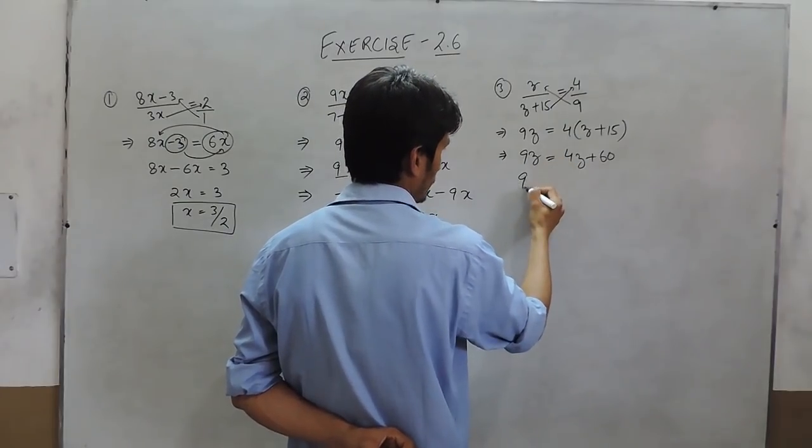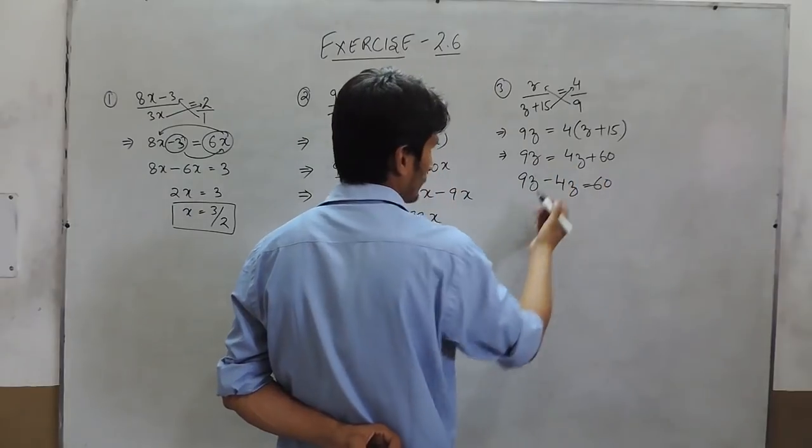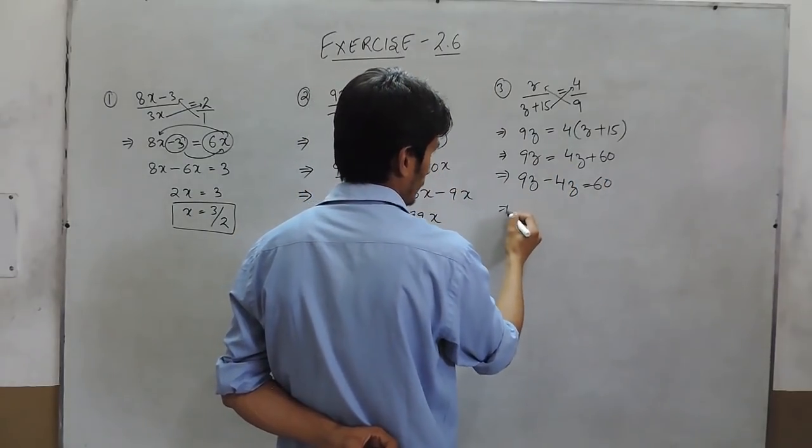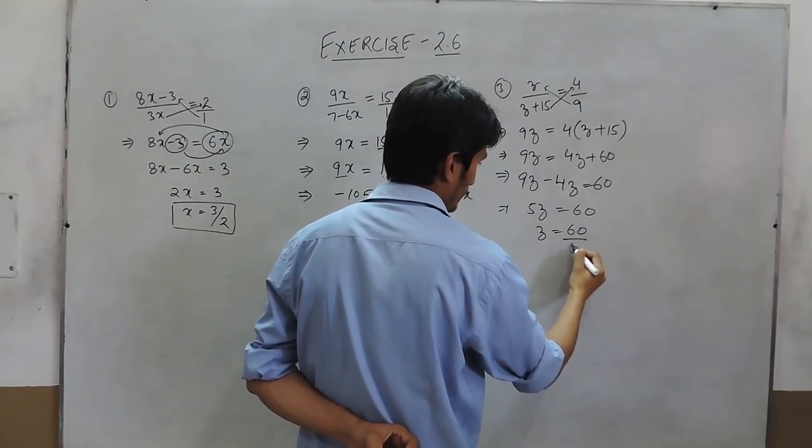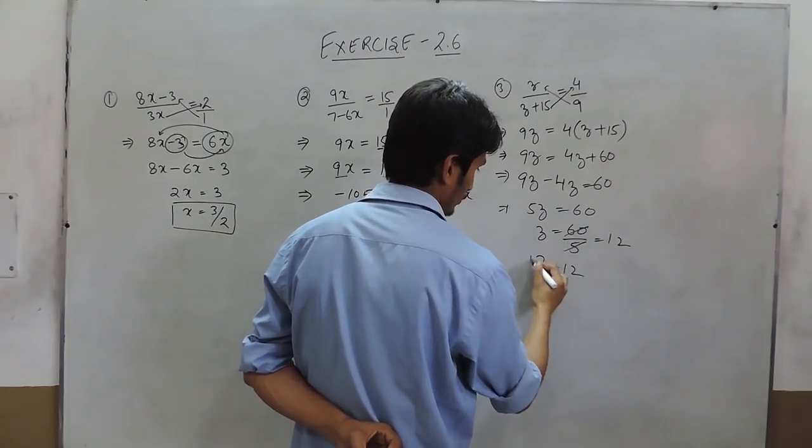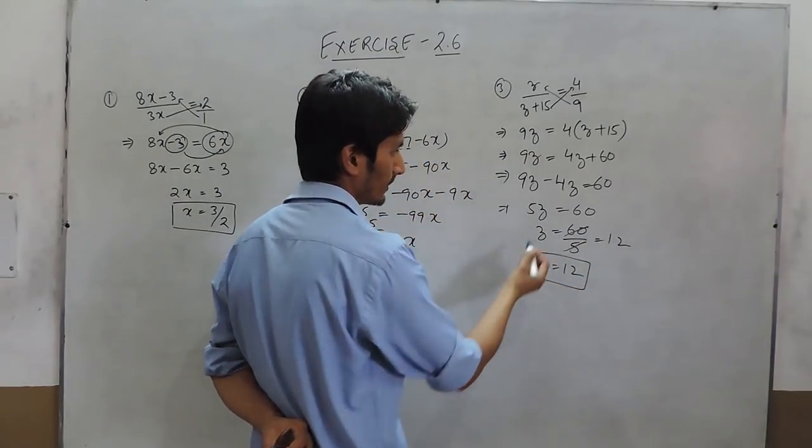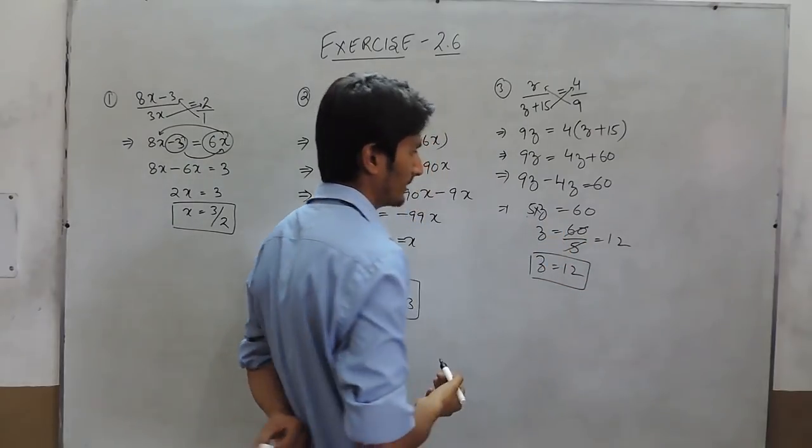So this can be simply shifted to this side, and positive will become negative. This is 5z. So z is equal to 60 upon 5 which is equal to 12. Here definitely it should divide 60 because here it is multiplying z. Thank you.